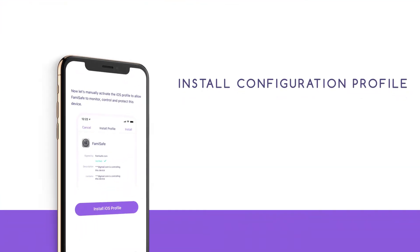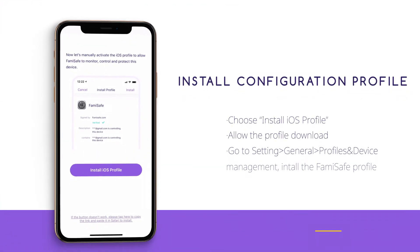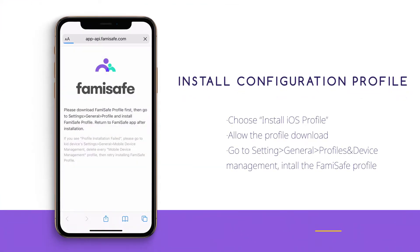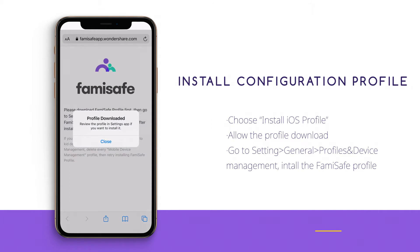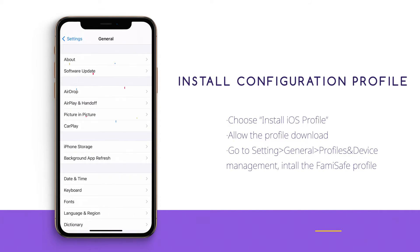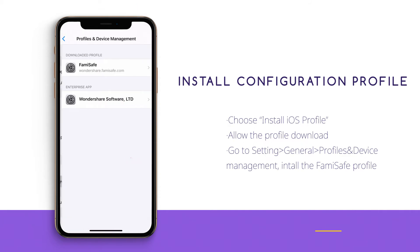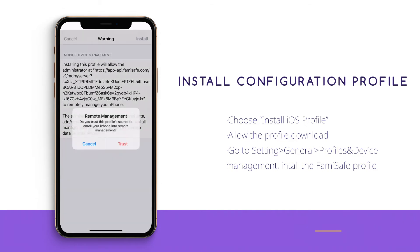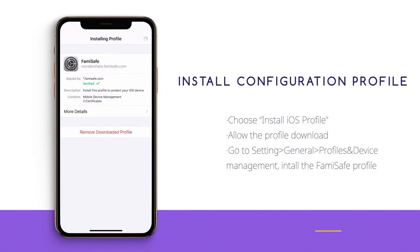Step 3: Install configuration profile. Choose to install the iOS profile, allow the profile download, then go to Settings > General > Profile & Device Management, and install the FamiSafe profile.